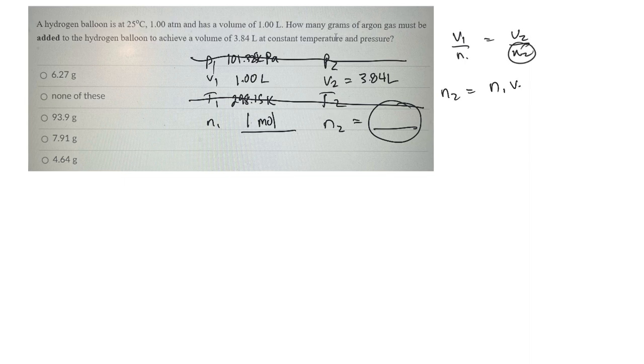So V1 over N1 equals V2 over N2. I'm solving for N2. So that's N1, V2 over V1. N1 is one mole times volume 2, 3.84 liters, divided by volume 1, 1.00 liters. The liters cancel. And so I wind up with 3.84 moles.